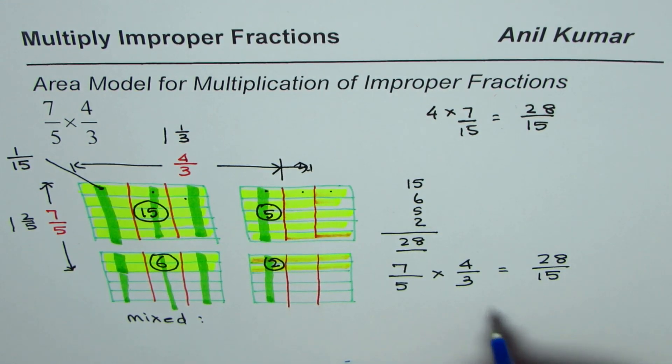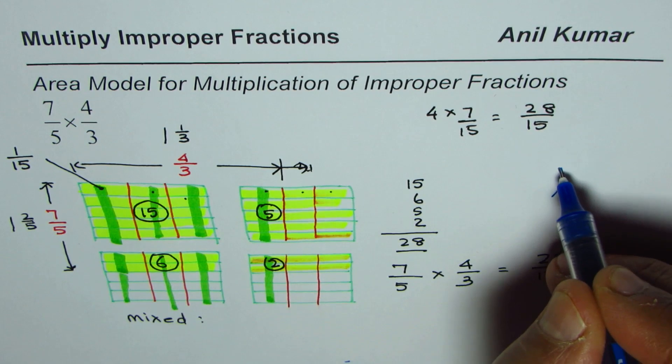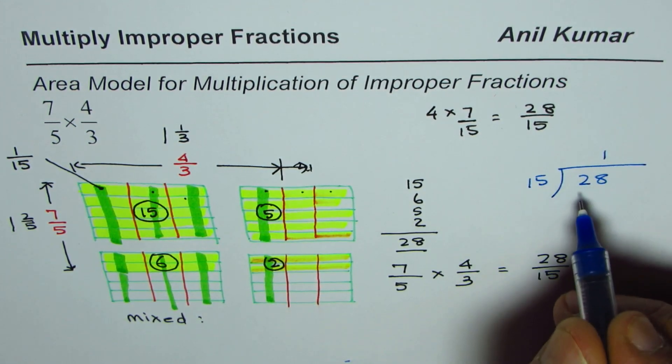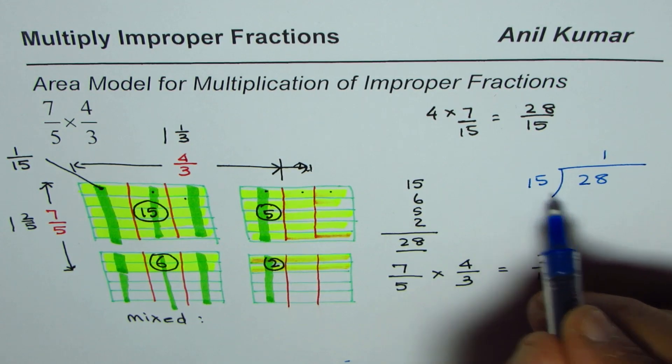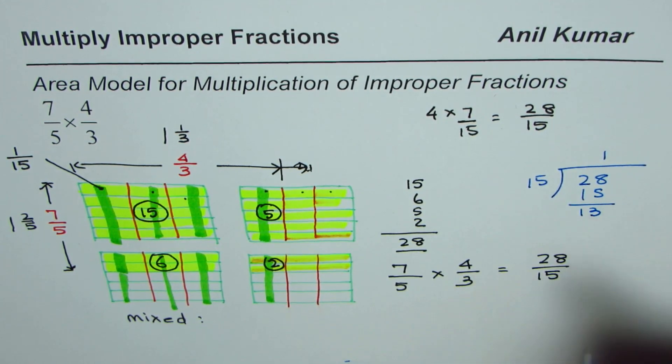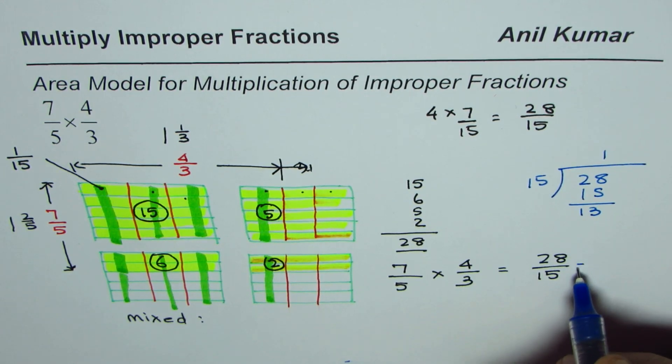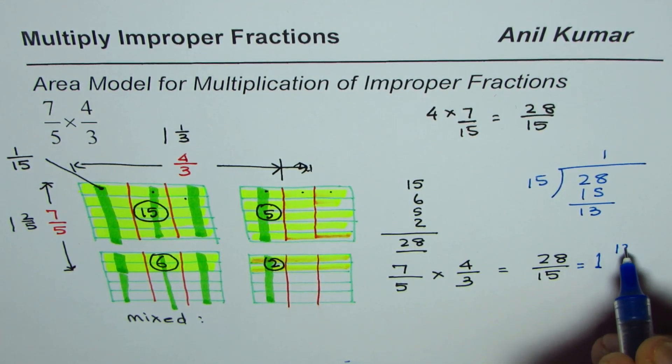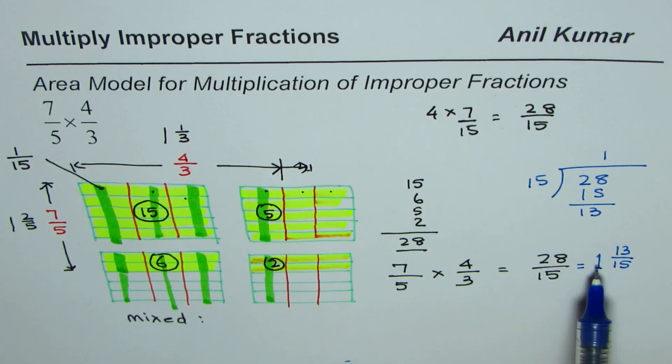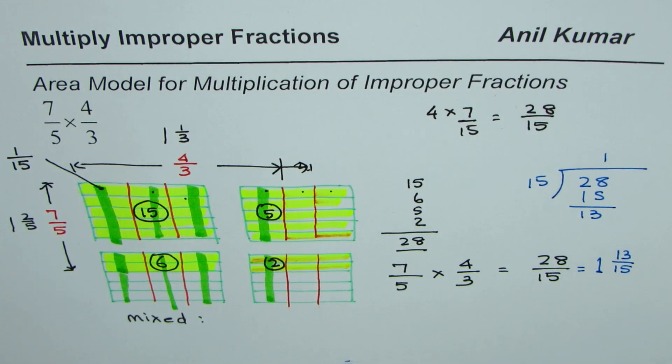And you get your answer as an improper fraction. At times, you can actually write this as a mixed number also. So let's convert this and write it as a mixed number. To convert, what do we do? We actually divide 28 by 15. 15 goes one time. Two times is 30. So take away. And what we get here is 13. And therefore, this could also be written as one whole, 13 over 15. So that is how you could also convert it into mixed numbers.